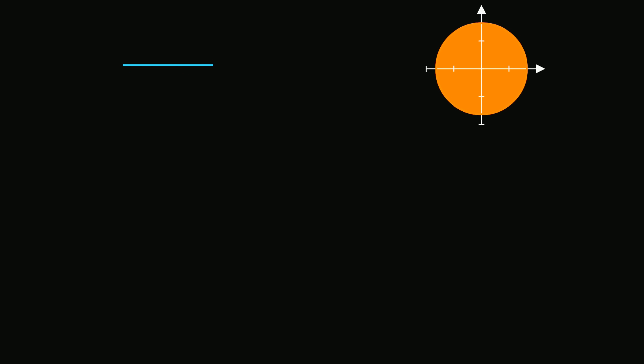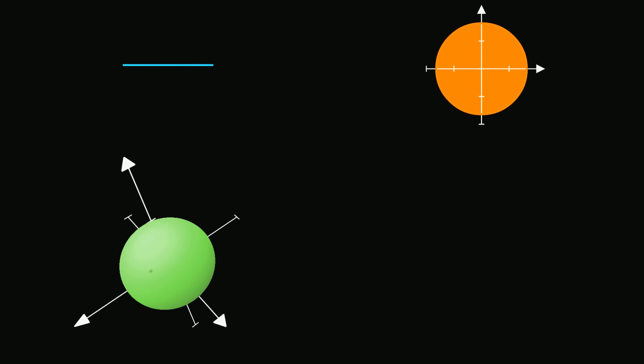In the first dimension, we can draw a line. In the second, we can use both the x and y dimensions to draw a circle. And in the third dimension, we add the z-axis and draw a sphere. What about when we go into the fourth dimension? What shape do we derive, and how do we calculate its volume?